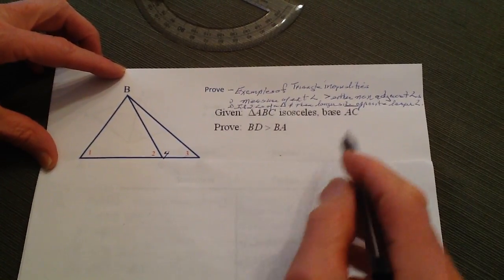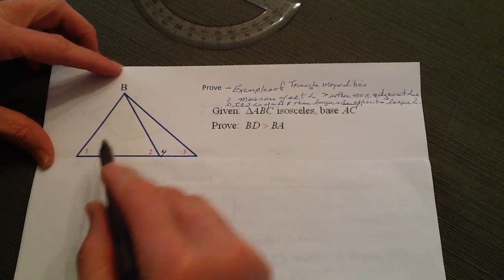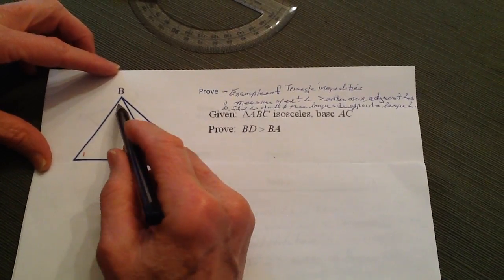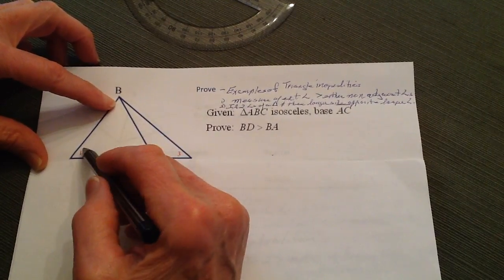According to that theorem, this angle is going to be greater than the non-adjacent angles. In other words, either one or whatever the number up here is, these are non-adjacent angles.